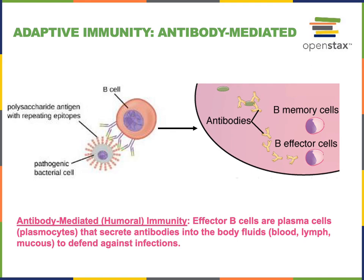Some of these B cells will be memory B cells to provide immunological memory to that specific pathogen. Some of the B cells produced are the effector B cells — the plasma cells that secrete antibodies into the blood, lymph, and mucus. Antibodies can bind to a bacterial cell or extracellular virus to neutralize them, or tag a pathogen to direct the process of phagocytosis. Antibodies can also label a pathogen to direct the phagocytic leukocytes, and can direct other defense proteins such as the complement system to help defend against specific infections.